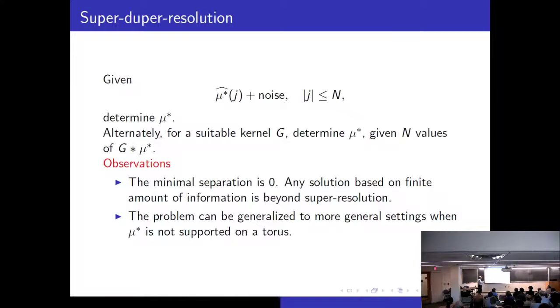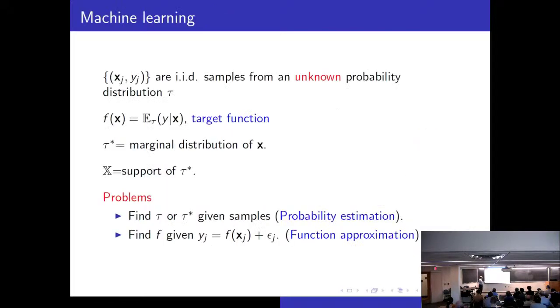A variation of this problem is we are given a certain kernel G and we are looking at the convolution of G with this μ*. Mathematically, this is equivalent because you just have to take the Fourier transform and divide by the Fourier coefficients of G.